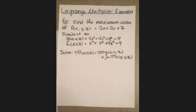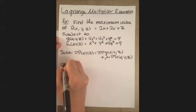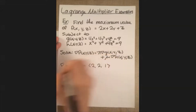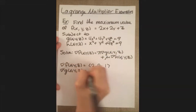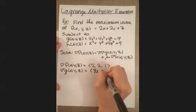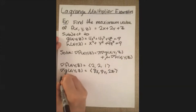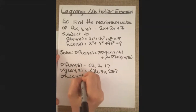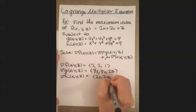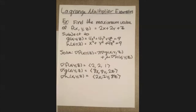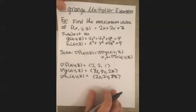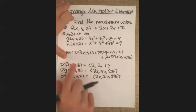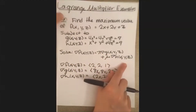Let's set up what the system of equations looks like. The gradient of f(x,y,z) is ⟨2, 2, 1⟩. The gradient of g(x,y,z) is ⟨8x, 8y, 2z⟩, and then the gradient of h is ⟨2x, 2y, 8z⟩. So the gradient of f equals lambda times gradient of g plus mu times the gradient of h.